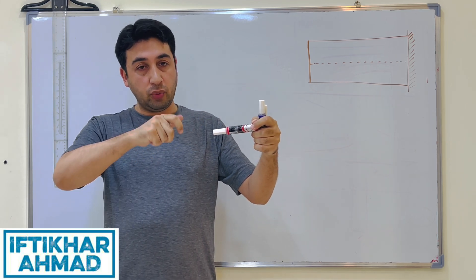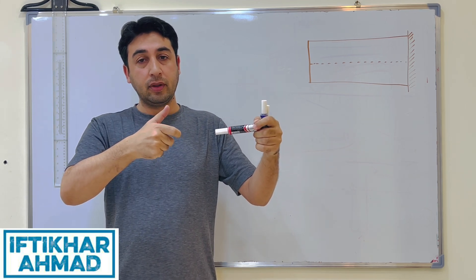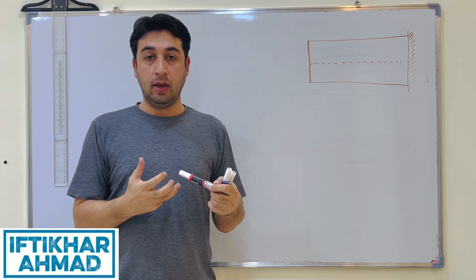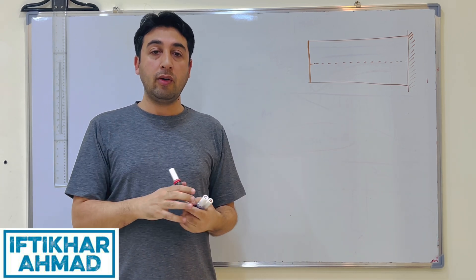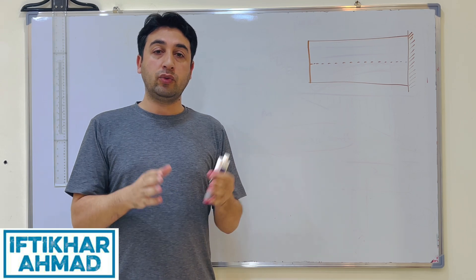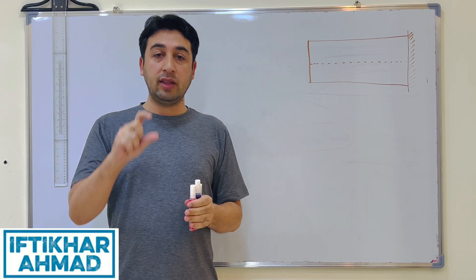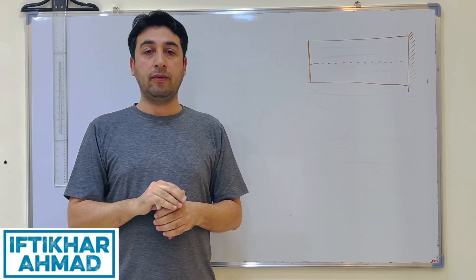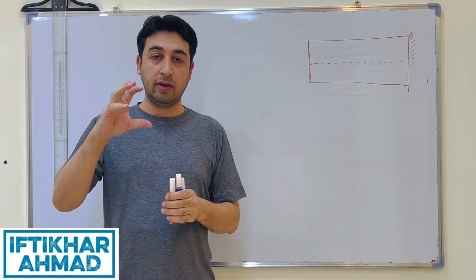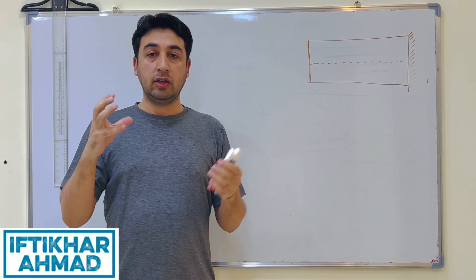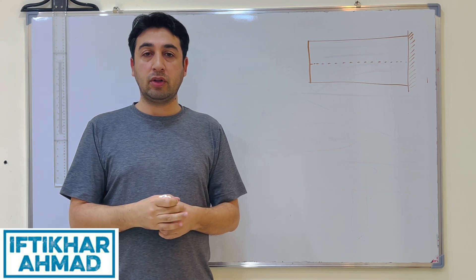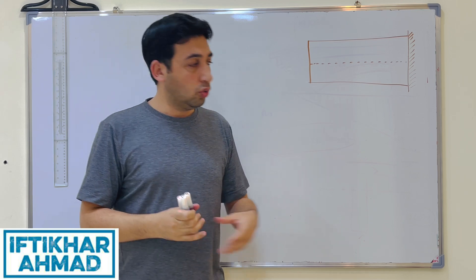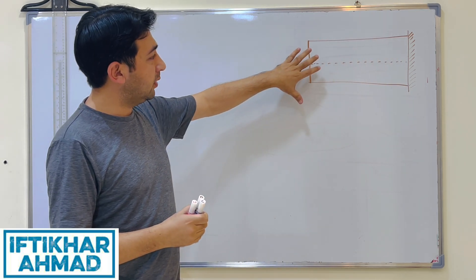Once you apply torque to a shaft and it twists, there is an angle of twist. If I have a shaft, it will twist with some angle. This angle of twist depends on many factors, and for that we will derive the torsion formula, which will tell us the relation between that angle of twist and many more factors like the length of the shaft, the diameter of the shaft, and the shear modulus.